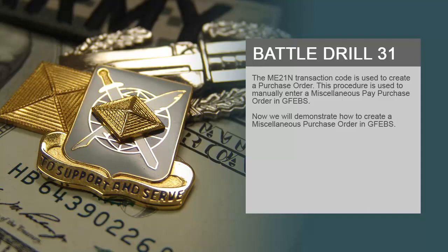The ME21N transaction code is used to create a purchase order. This procedure is used to manually enter a miscellaneous pay purchase order in GFIBS. Now we will demonstrate how to create a miscellaneous purchase order in GFIBS.